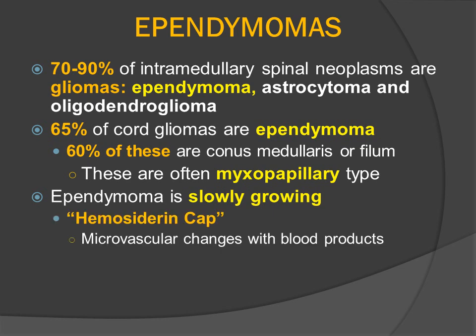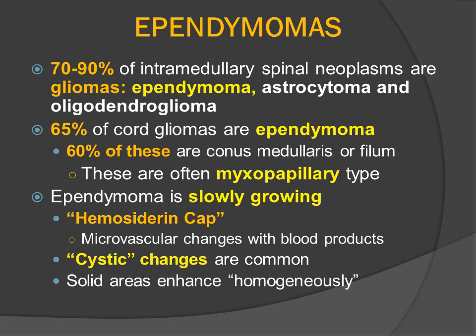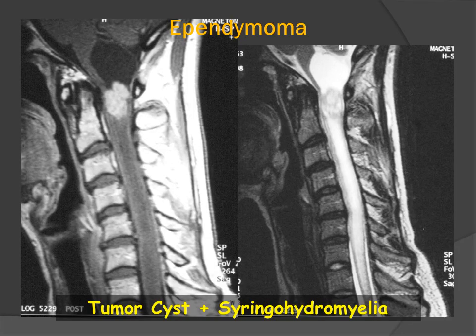Ependymomas are slowly growing tumors. They are very commonly complicated by microvascular changes that produce blood products, causing T2 shortening and susceptibility changes, oftentimes described as the hemosiderin cap. The tumors are also able to distort the flow of spinal fluid through the central canal and may be associated with polar cysts above and below an enhancing mass, which represents the solid portion of the tumor. Because they are typically within the central portion of the cord and are very well demarcated, they are oftentimes resectable.